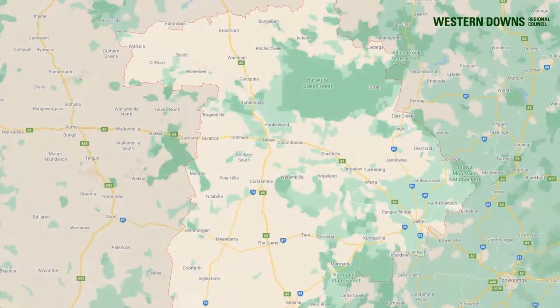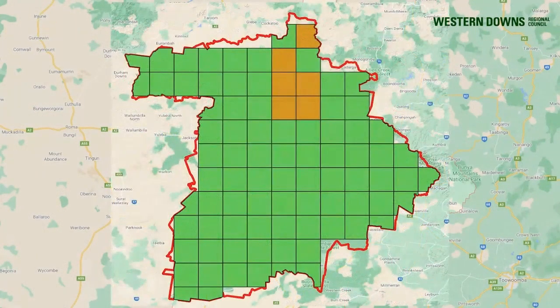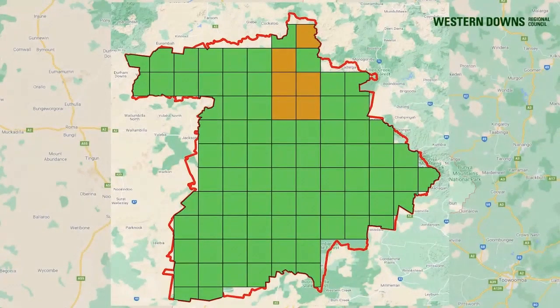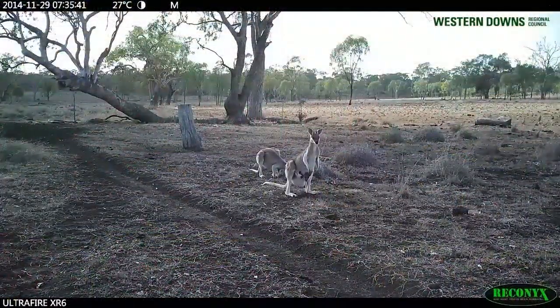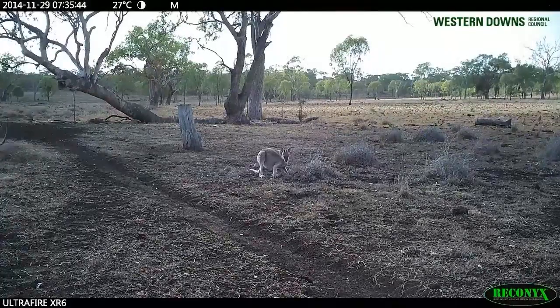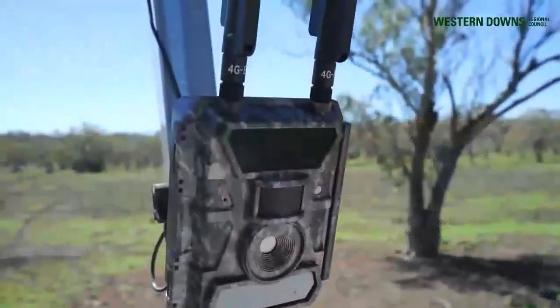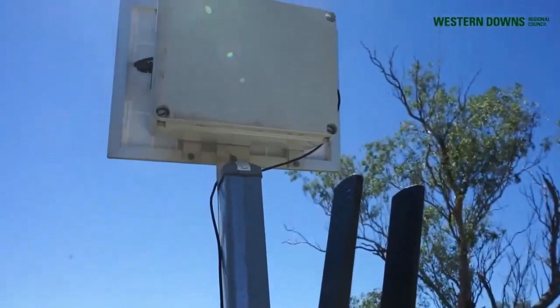A random stratified sampling design was implemented based on a 22-kilometre grid pattern across the region. Sites were selected with criteria of a water point with cellular connectivity, and landowner knowledge was used to choose sites that also had regular pest activity. Through supplemented external funding over a two-year period, council set up 87 of the 93 sampling sites with Enduro 4G trail cameras on a three-metre pole with solar power. Each unit was set with a motion trigger, a one-minute delay, and a 24-hour capture period to limit bias.